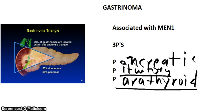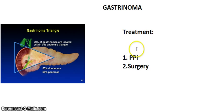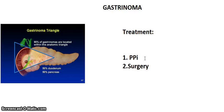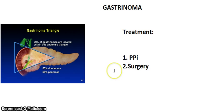Finally, treatment. The first line of therapy is proton pump inhibitors, because you want to bring the acid concentration down. The second step is ultimately surgery to remove the tumor. And that's it.